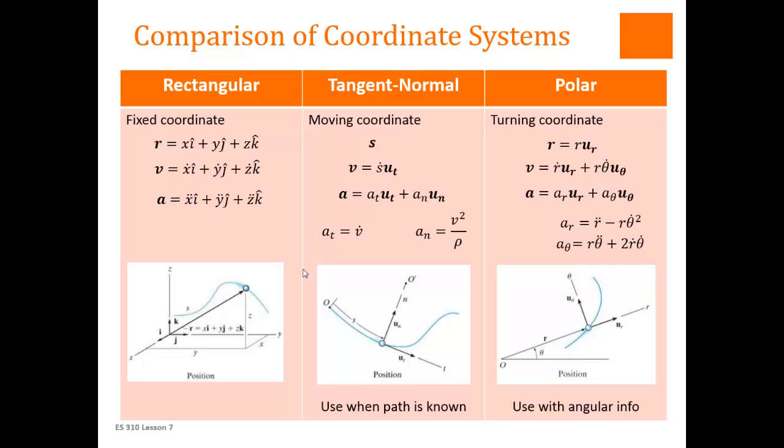And then we would use the tangential normal coordinates to find the velocities and the accelerations. In this case, there is one component of the velocity and there are two components of the acceleration, one that is tangential or along the curve and one that is normal or towards the center of the curve, which is sometimes called the centripetal acceleration.